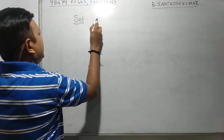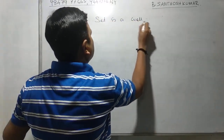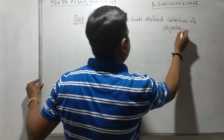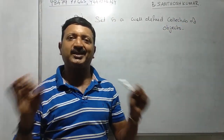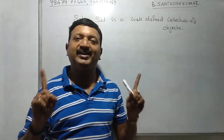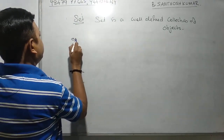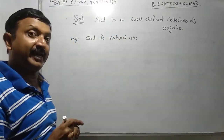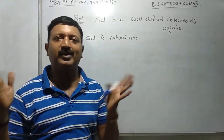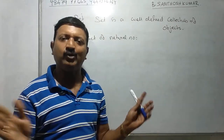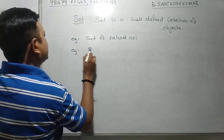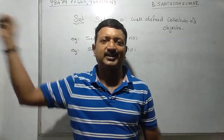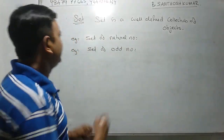Set. A set is a well-defined collection of objects. For example, the set of natural numbers: {1, 2, 3, 4, 5, ...}. The set of odd numbers: {1, 3, 5, 7, 9, ...}. That's a well-defined collection of objects.